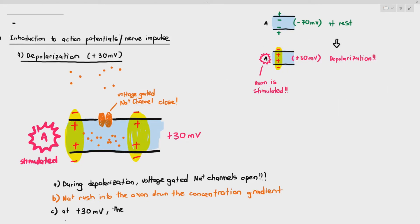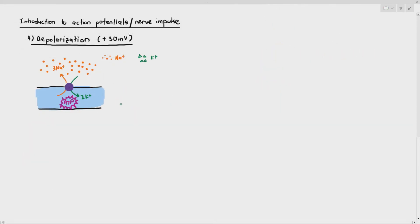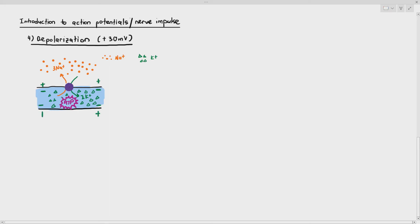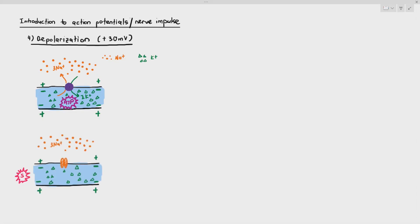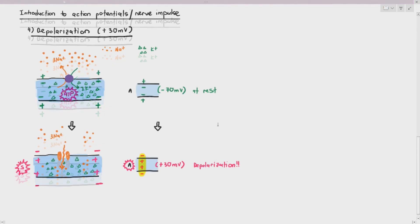At positive 30 millivolts, the voltage-gated sodium ion channels close. To summarize: first, to create the resting membrane potential, the pump actively transports out three sodium ions and transports in two potassium ions. This creates the resting membrane potential where the inside has a lower voltage — negative 70 millivolts. During depolarization, the voltage-gated sodium ion channels open due to the stimulus, sodium ions rush in down the concentration gradient, and the inside now has a higher voltage — positive inside and negative outside. This is how depolarization works. Now let's immediately go into repolarization.